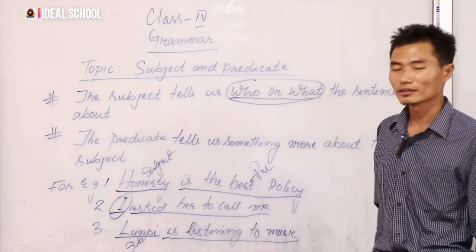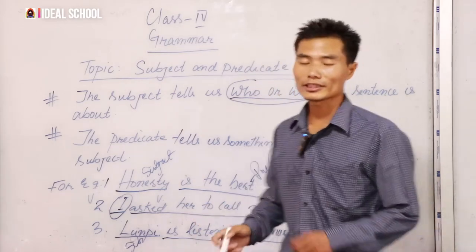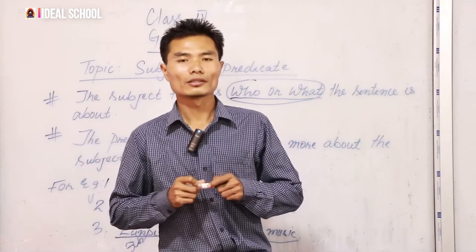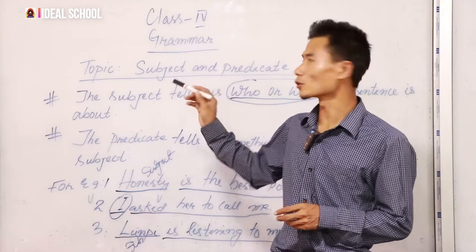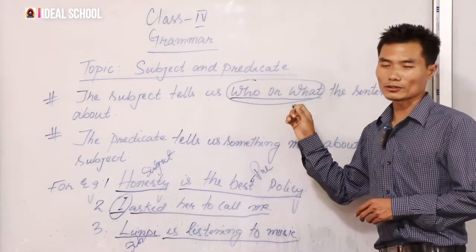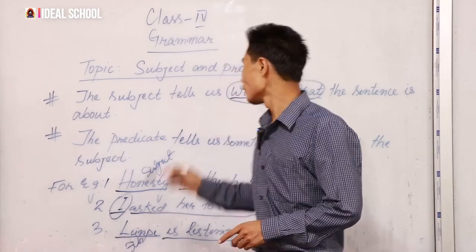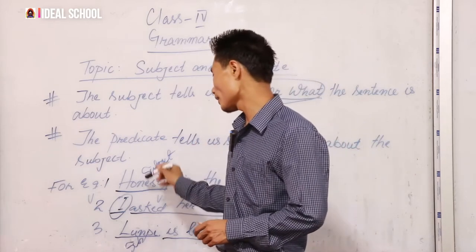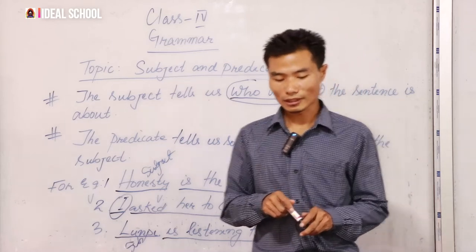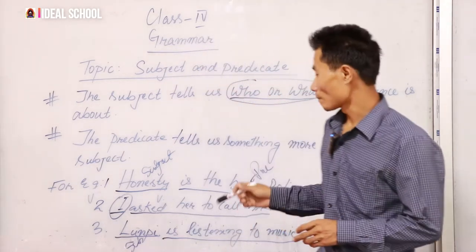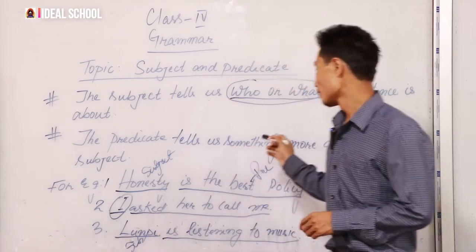Predicate means something more about the subject. So 'is listening to music' will be the predicate. Lumpy is a human being — who or what — and 'is listening to music' is the predicate, because it tells more about the subject. Sometimes nouns come into the equation. You should clearly understand who or what, and the subject tells us who or what.